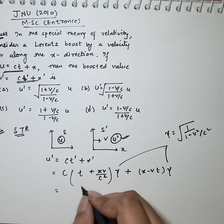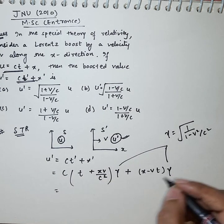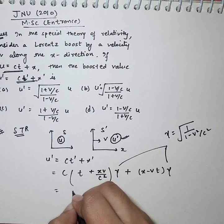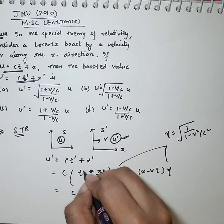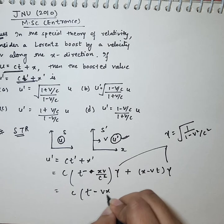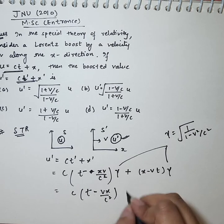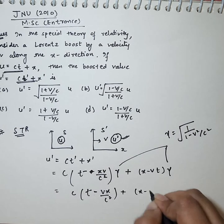So we have to calculate the values. Basically, c times t minus vx by c square plus x minus vt, both having gamma.